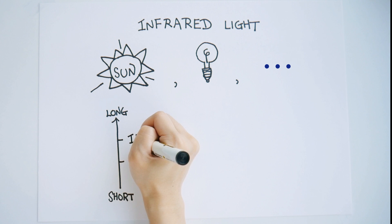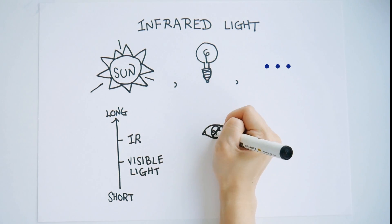Infrared light is similar to visible light except that it has a slightly longer wavelength. This means that infrared light is undetectable to the human eye, which makes it perfect for wireless communication.